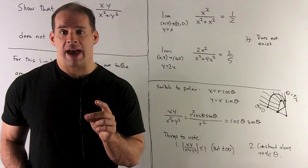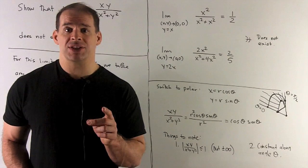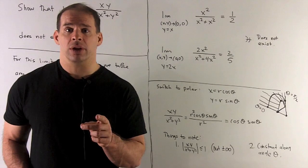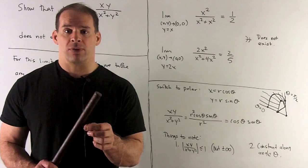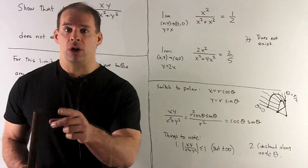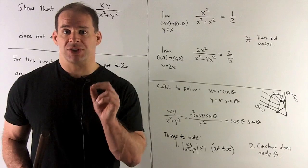Next, our function doesn't depend at all on r, the radius. It only depends on the angle. So if I take an angle, take the ray going from the origin out along that angle, our function's going to be constant on that ray.